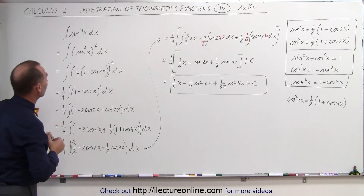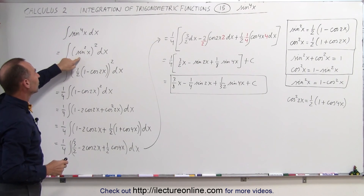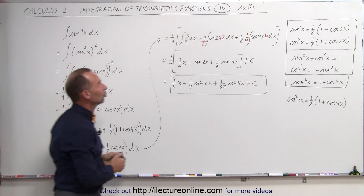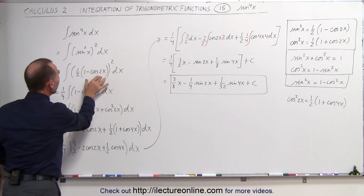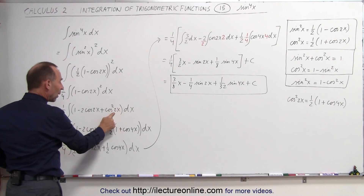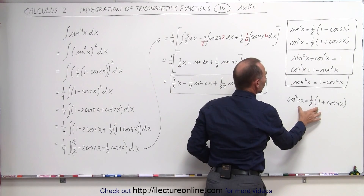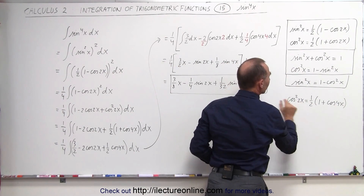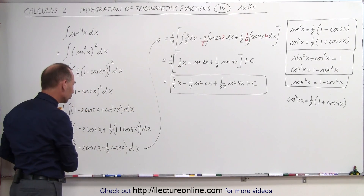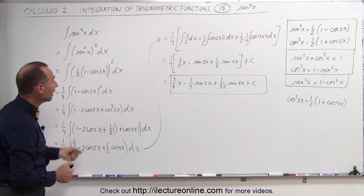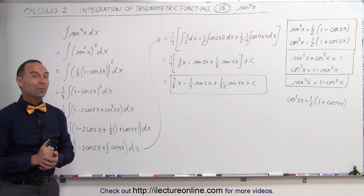Without tricks, I don't think we would have gotten there. So we wrote sine to the fourth of x as sine squared of x, squared, then substituted that sine squared of x in terms of cosine of 2x. We multiplied it out, got a square again, so we did a similar substitution for cosine squared of 2x. After substituting and combining all terms, everything was to the first power, and then we integrated each of the separate integrals. And that's how we do that.